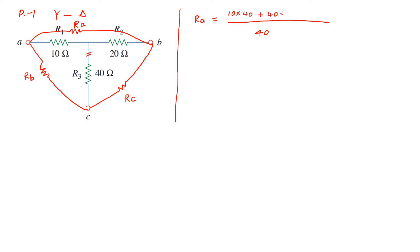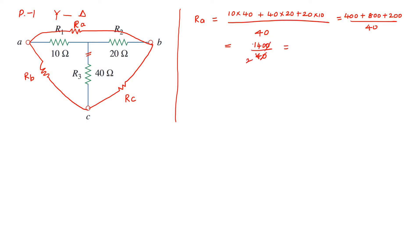Plus 40 into 20, plus 20 into 10. That gives 400 plus 800 plus 200, divided by 40. That is 1400 divided by 40. The answer is 35. Ra equals 35 ohm.